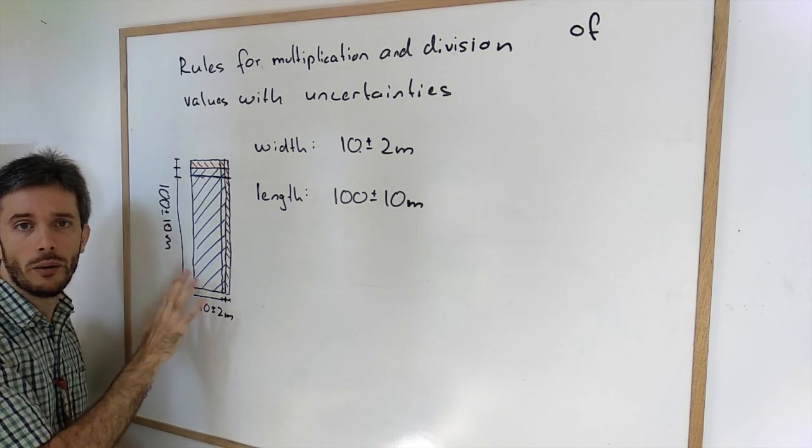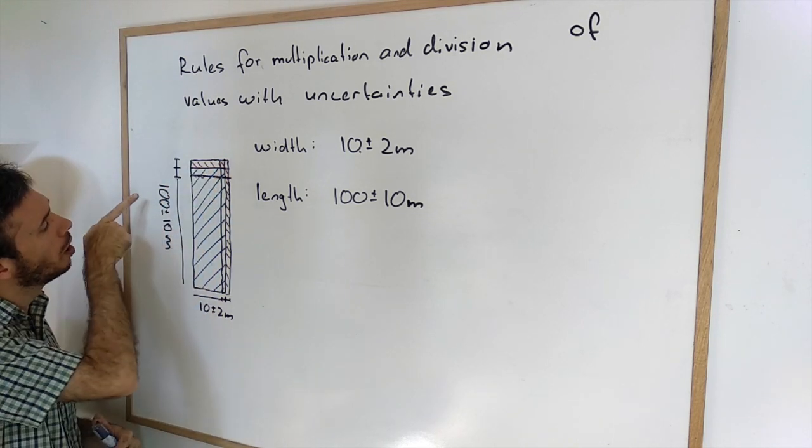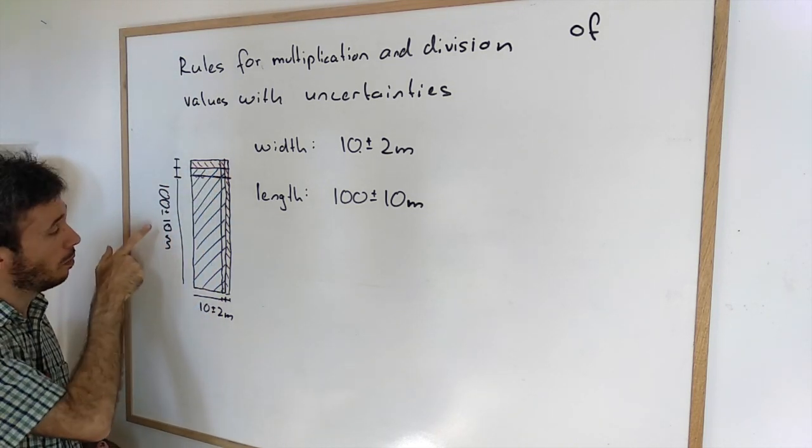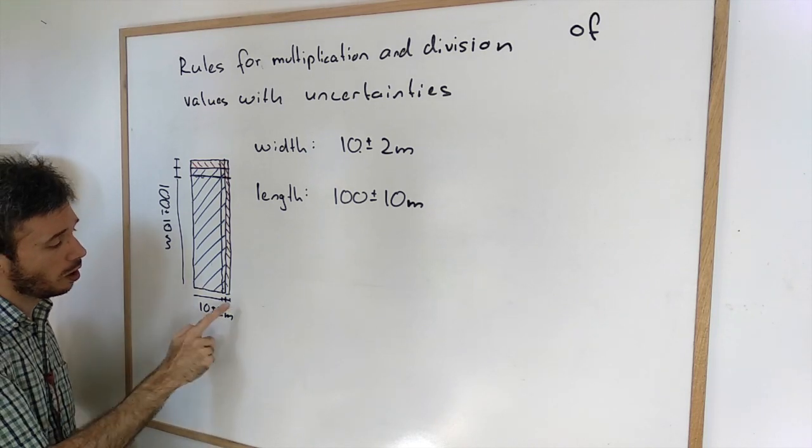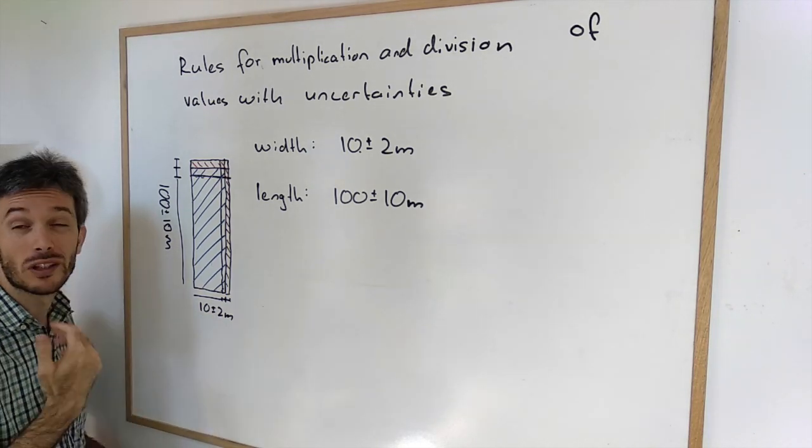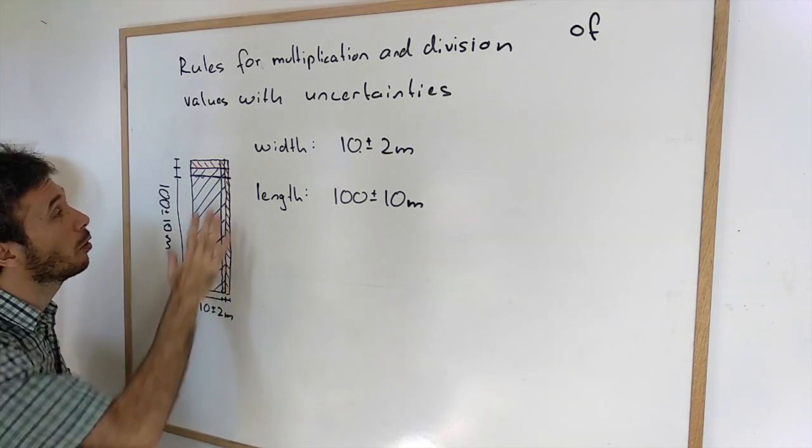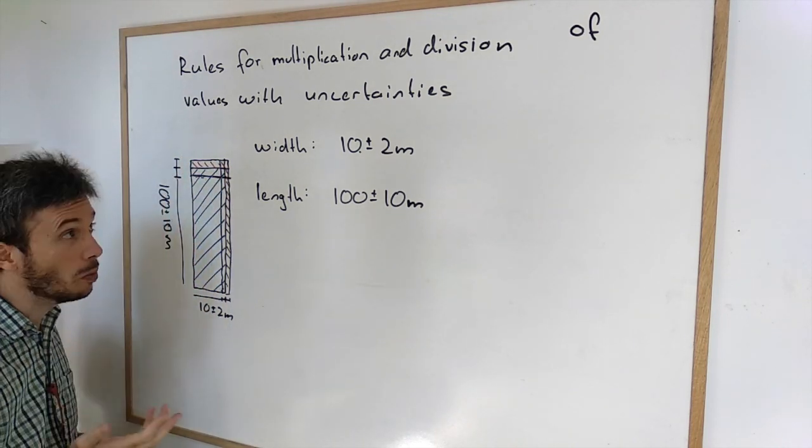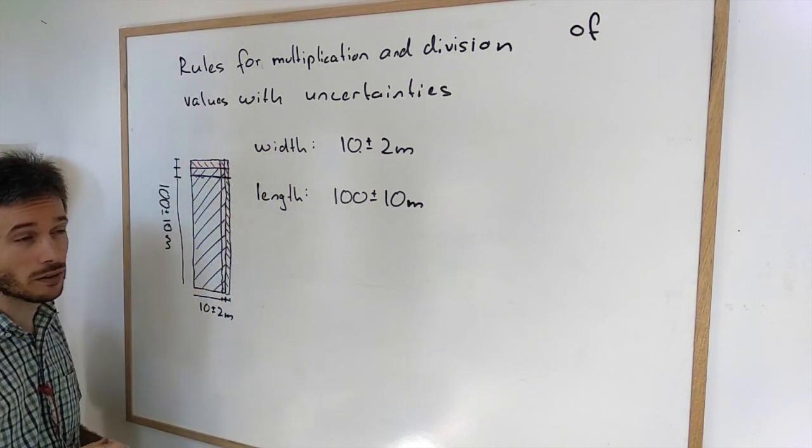For example, if I have a long room of a length of 100 meters plus minus 10 meters, and the width of 10 meters plus minus 2, and I want to figure out what's the surface area of this room, I will have to multiply these two values.